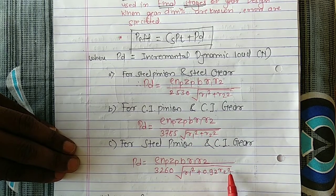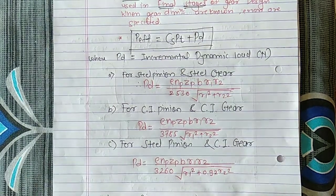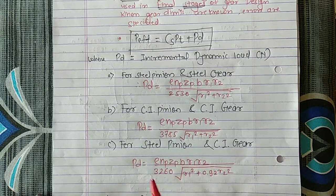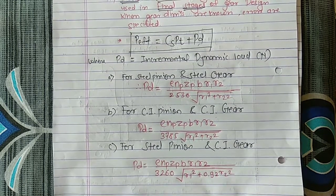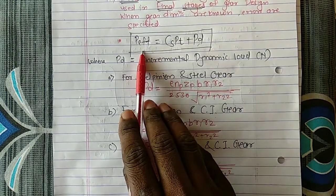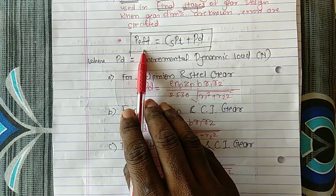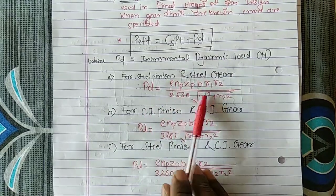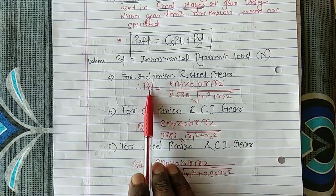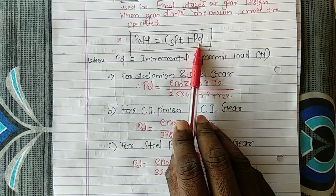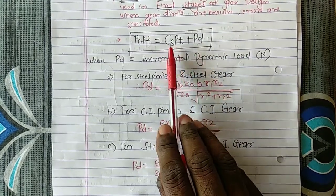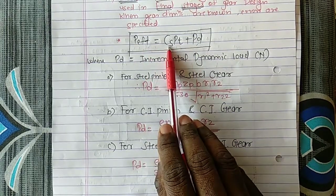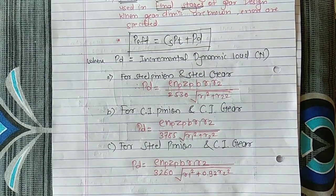These equations are used to find the incremental dynamic load P_D. Once P_D is calculated, substitute it into the equation: P_effective = C_S × P_T + P_D, where C_S is the service factor and P_T is the tangential force. You already know how to calculate these.